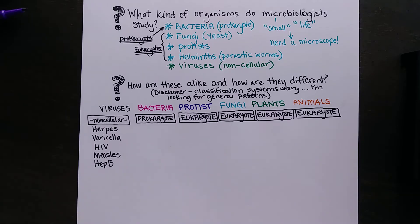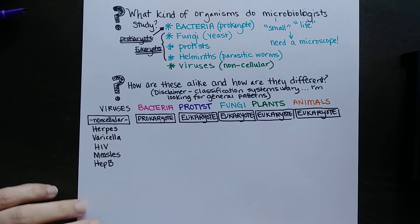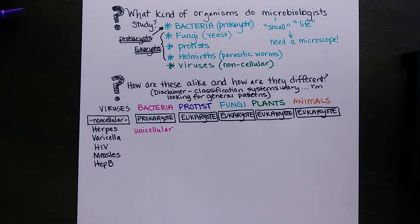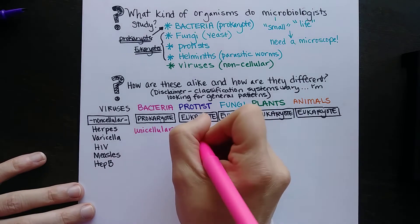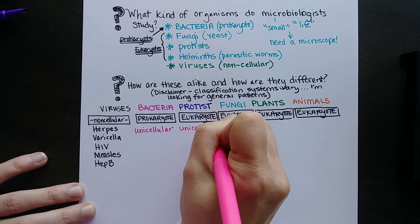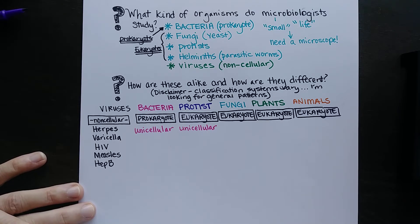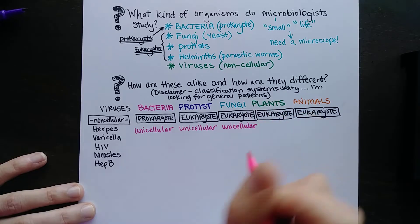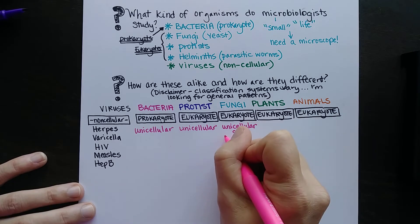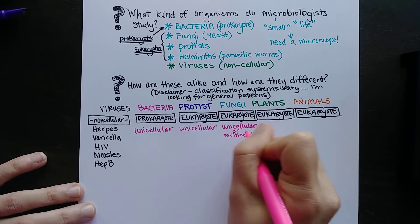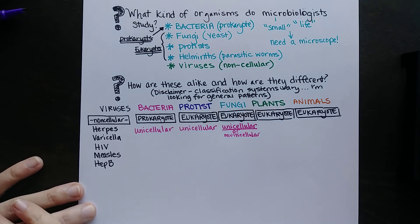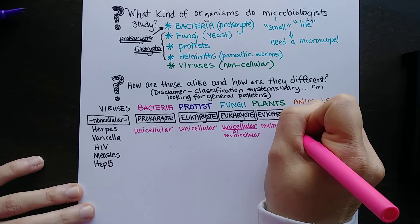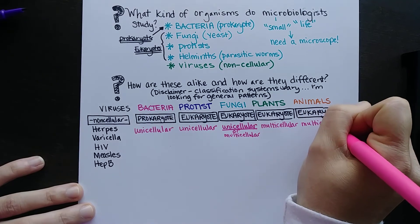Let's talk about how many cells each type usually comes in. Viruses are non-cellular. Bacteria are unicellular — there might be billions living near each other, but they're not considered a multicellular organism. Protists are unicellular, like amoebas or the organism causing amoebic dysentery. Fungi can vary — yeast can be unicellular, which is typically what causes disease, but fungi can also be multicellular like a mushroom. Plants and animals are multicellular.